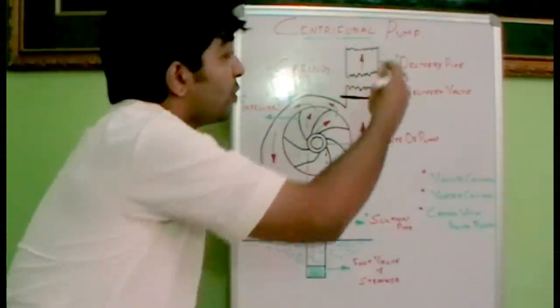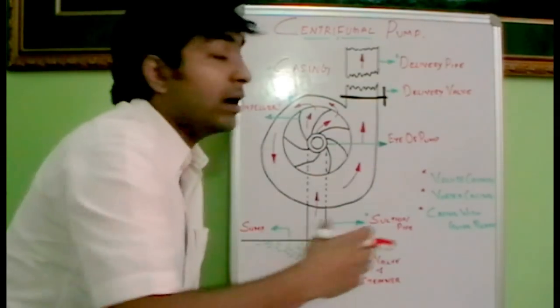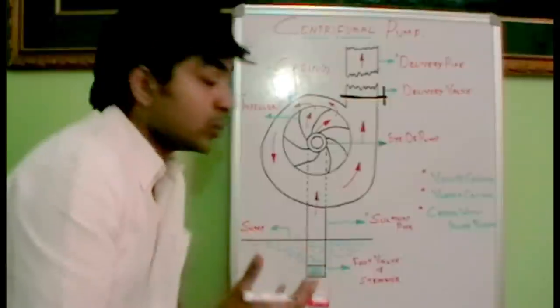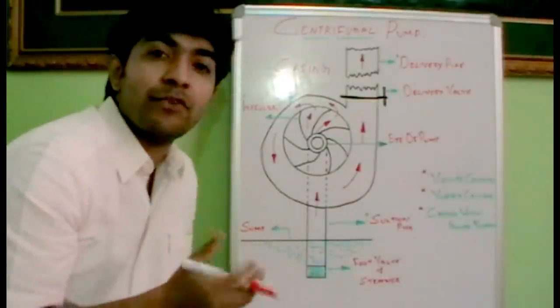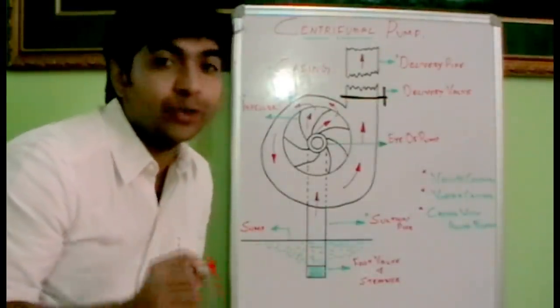So when it is delivered, a flow with increased pressure is delivered at the delivery end through the centrifugal pump. So that's how simply a centrifugal pump is working. I hope you understand. Thank you.